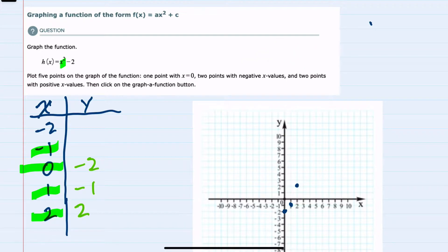First, negative 1 substituted in would be y equals negative 1 squared minus 2. And since negative 1 squared is a positive 1 minus 2, this would simplify to minus 1. So we have the coordinate minus 1, minus 1, which would be here.